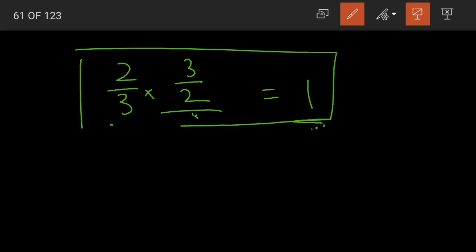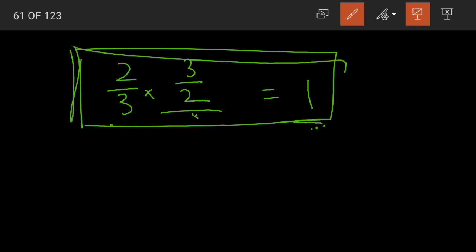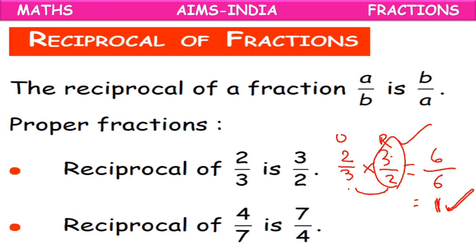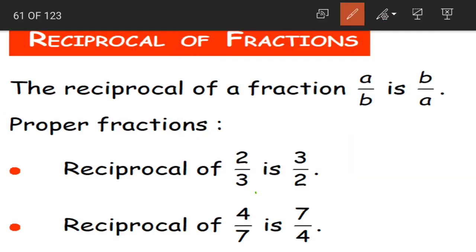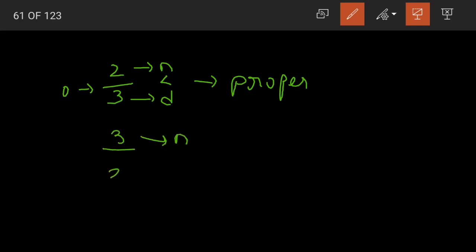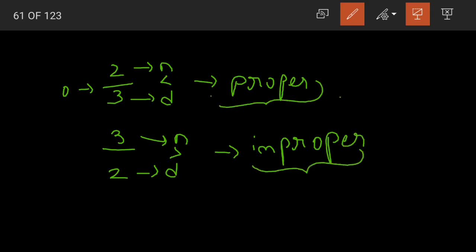When we multiply a fraction by its reciprocal, the answer is always 1. Now observe: the reciprocal of a proper fraction is always an improper fraction. For 2/3, the numerator 2 is less than denominator 3, making it a proper fraction. Its reciprocal 3/2 has numerator 3 greater than denominator 2 — so it is an improper fraction. The reciprocal of a proper fraction will always be an improper fraction.